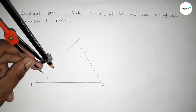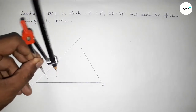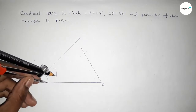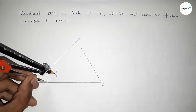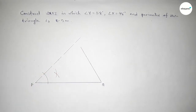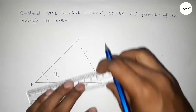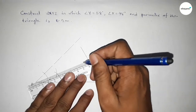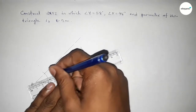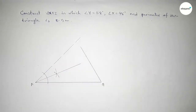Putting the compass at point P and taking any length, drawing an arc. With the same length, putting the compass at the other arm and cutting here. Both curves intersect at a point. Now joining this line to complete the angle bisector at P.